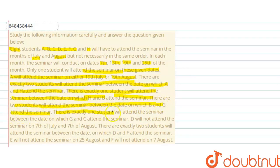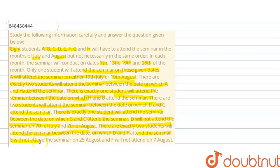There is exactly one student who will attend the seminar between the dates on which G and C attend. D will not attend the seminar on 7th of July and 7th of August. There are exactly two students who will attend the seminar between the dates on which D and F attend. E will not attend the seminar on 25th August and F will not attend the seminar on 7th August.